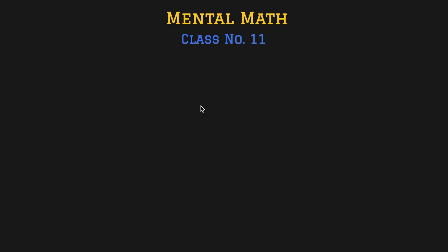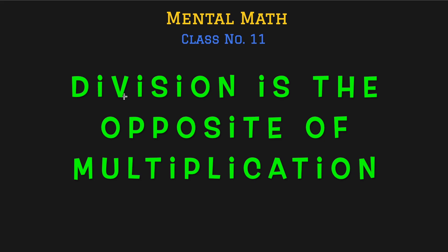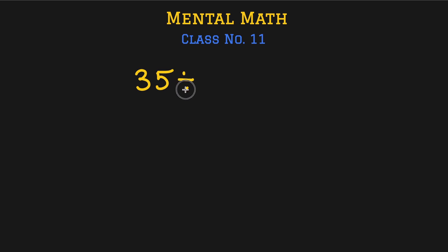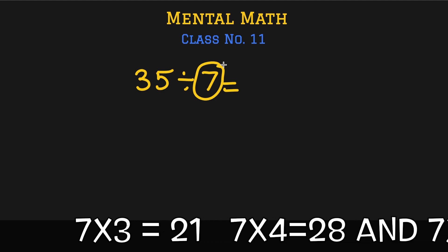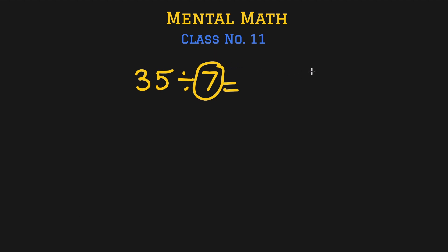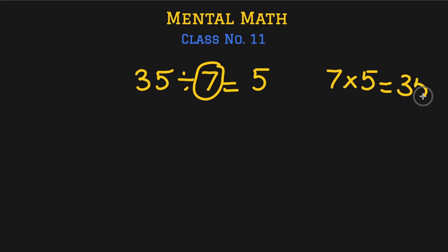Division is the opposite of multiplication. So if I have a question like 35 divided by 7, we solve it by looking at the table of 7 and finding where 35 appears. 7 times 2 is 21, 7 times 4 is 28, and 7 times 5 is 35 — so the answer is 5, because 7 multiplied by 5 equals 35.